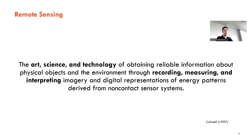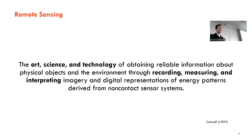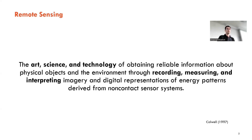This is the definition of remote sensing provided by Colwell: remote sensing is the art, science and technology of obtaining reliable information about physical objects and the environment through recording, measuring and interpreting imagery and digital representations of energy patterns derived from non-contact sensory systems. Remote sensing data are collected from different platforms — it can be a drone, a satellite, or even a sensor on a tripod — all without physical contact with the objects.